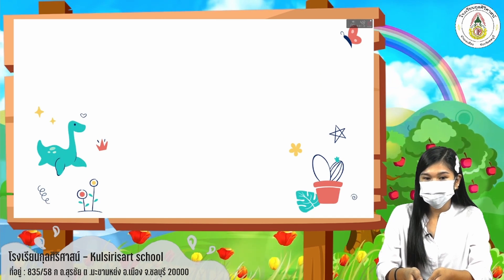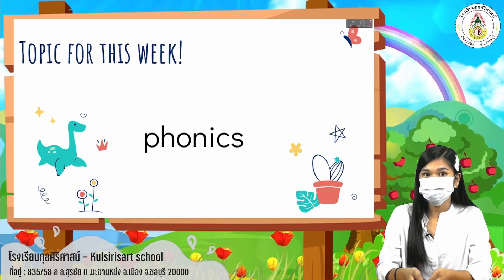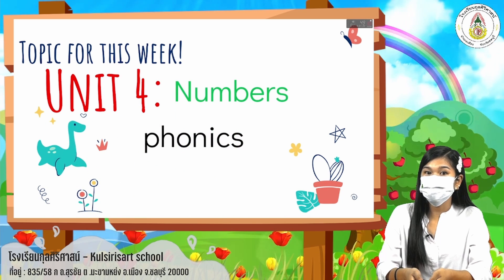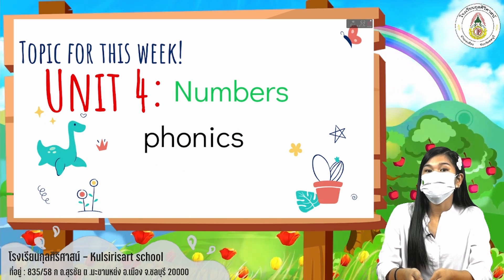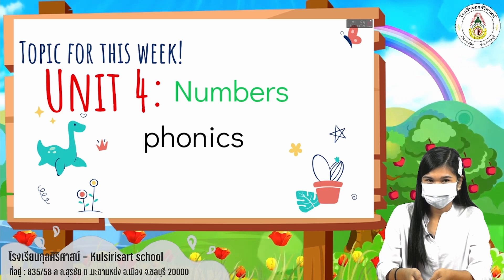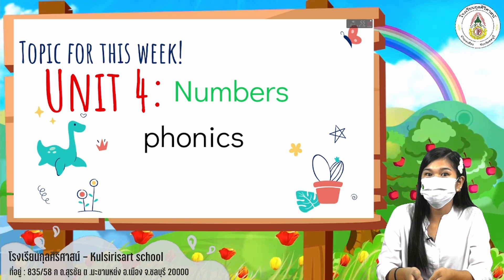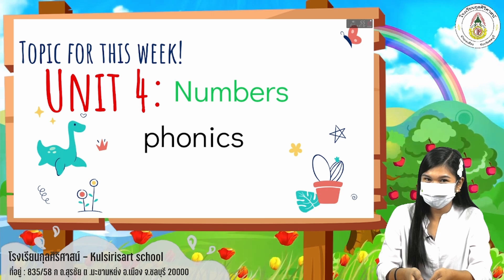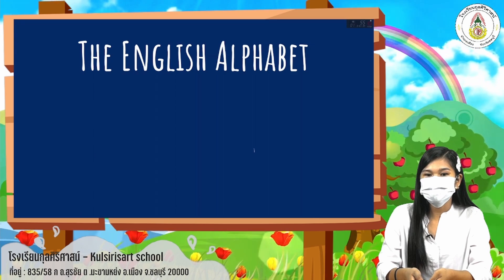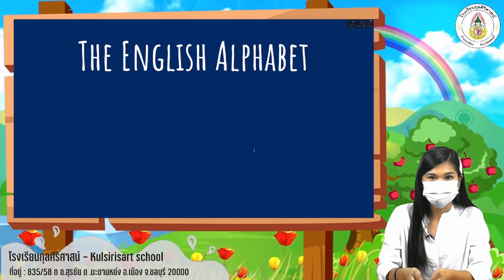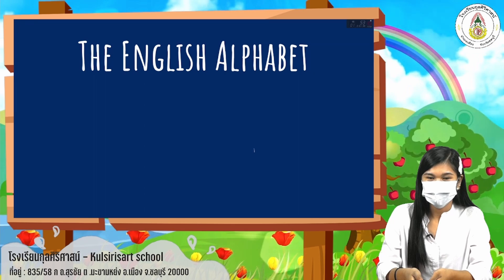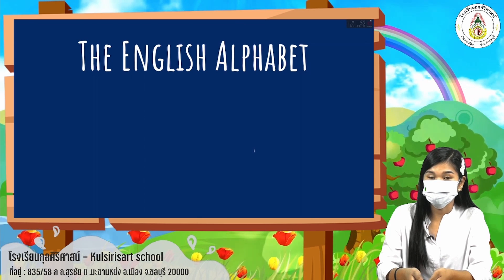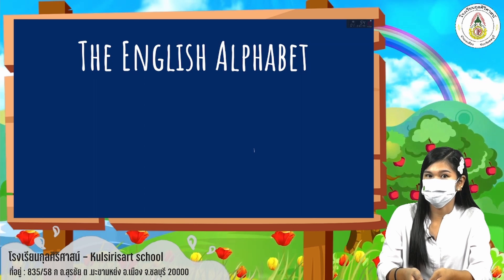Our topic for this week is all about phonics under Unit 4. When we say phonics, we mean the sounds of the letters. We are going to talk about the sounds of the letters. Now let's take a look at the English alphabet. We are going to study the letters from A to Z together with their sounds.